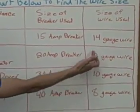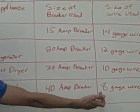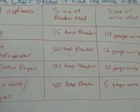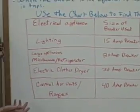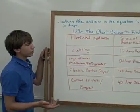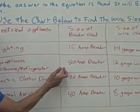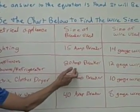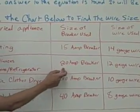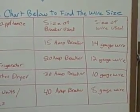Each of these, and the size of wire used in this column, corresponds to which breaker you would use with it. So when you find out that your microwave requires a lot more power — let's say the equation shows it takes up twenty amps — you're going to use a twenty-amp breaker in your panel in your basement, and you're going to use twelve-gauge wire.